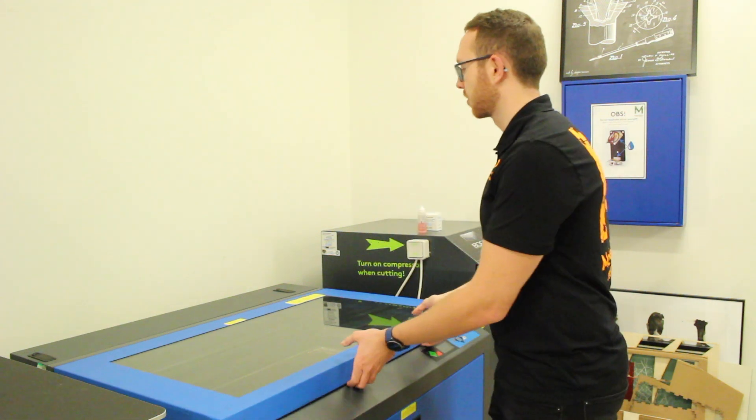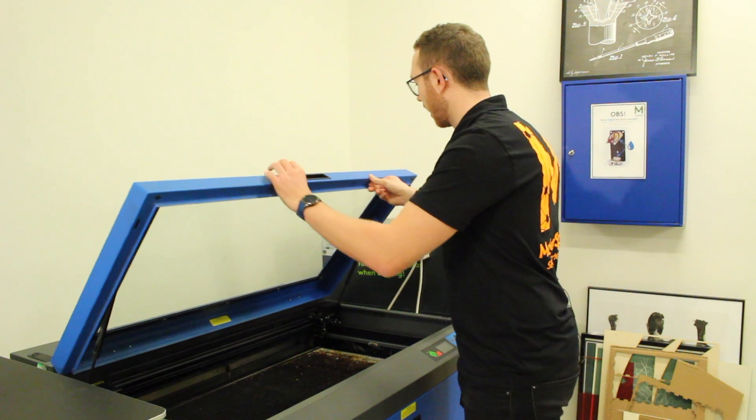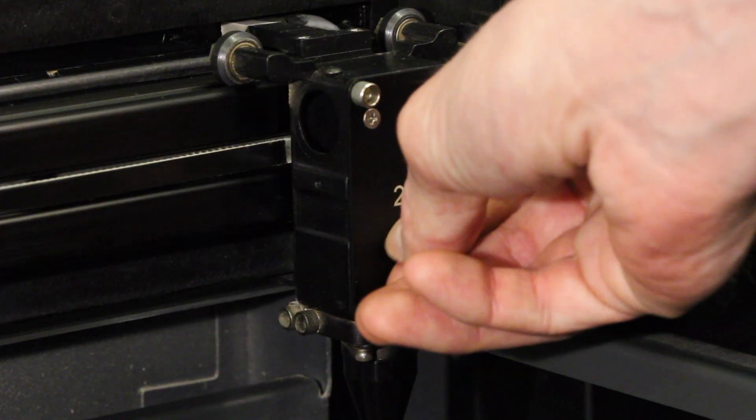So what you do is, first of all, you'll open the lid like this and then you'll unscrew these three screws.